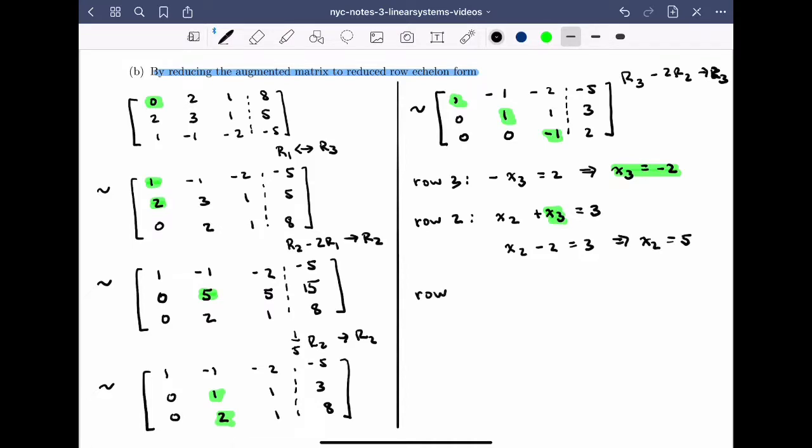Finally, I can go to row 1, where the coefficients tell me that x1 minus x2 minus 2x3 is equal to minus 5. And this time, I'll sub in both x3 is equal to minus 2 and x2 is equal to 5.